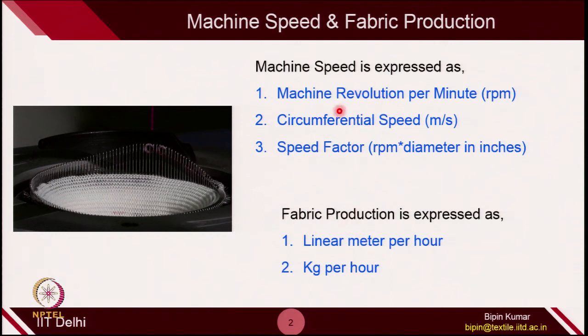Depending on the machine's capacity — its RPM or speed — we can relate the fabric production, which can be expressed either in linear meters per hour (how many meters of fabric are wound from the bottom) or in kg per hour (the weight of fabric produced per hour). I am going to derive useful relationships connecting speed with production.